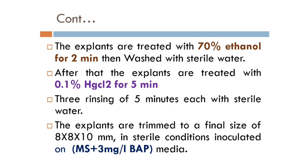Inoculation: The explants are inoculated onto MS media — MS is Murashige and Skoog media — plus 3 mg per liter BAP. BAP is Benzylaminopurine, a cytokinin. After initiation, we obtain shoots through these stages. We are using MS plus BAP medium here.